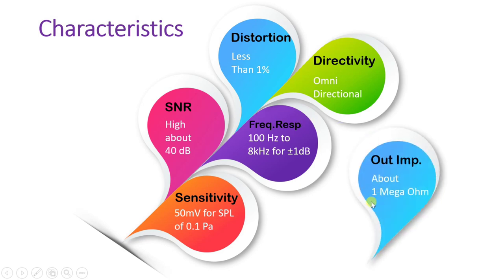The output impedance is very high — in the order of 1 mega ohm. So the further circuit should also have an impedance of 1 mega ohm. That impedance matching is required when using a crystal microphone. These are the characteristics of crystal microphone.